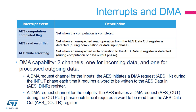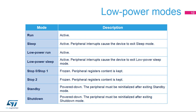Direct memory access requests are generated internally for both incoming and outgoing data. The DMA channel must be configured in memory-to-peripheral or peripheral-to-memory mode with a data size equal to 32 bits. Here is an overview of the status of the AES accelerator in each of the low-power modes. AES operations are not possible when the device is in stop mode.